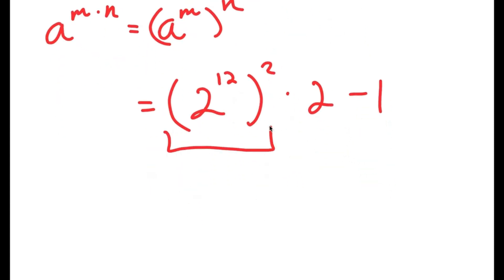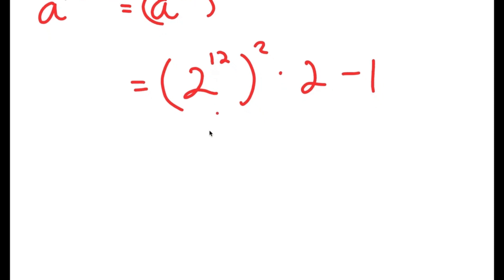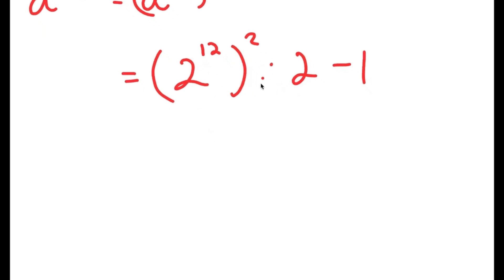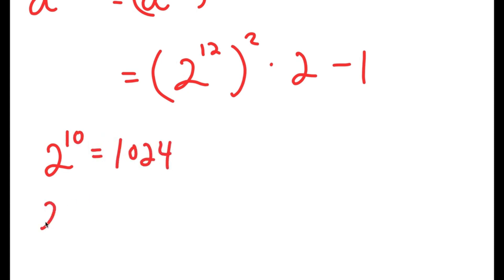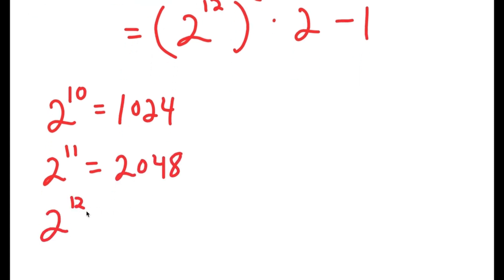Now I'm going to plug in the actual value of 2 to the power of 12, because it's small enough that we know the exact value. If you don't know what 2 to the power of 12 is: 2 to the power of 10 you should always remember as 1024. So 2 to the power of 11 is double 1024, which is 2048. And 2 to the power of 12 is double 2048, which is 4096.